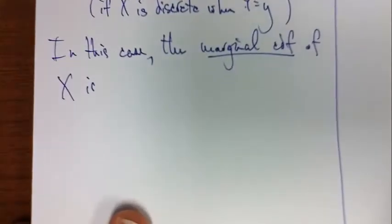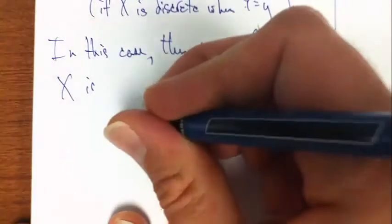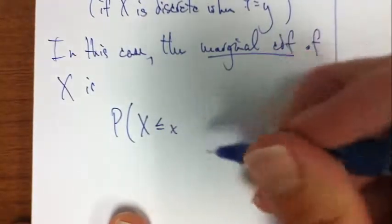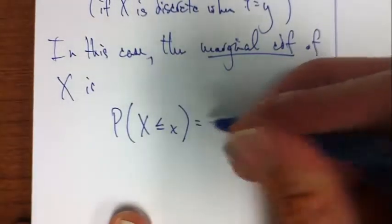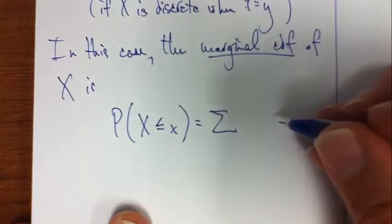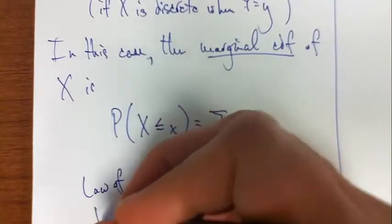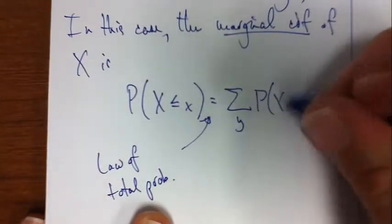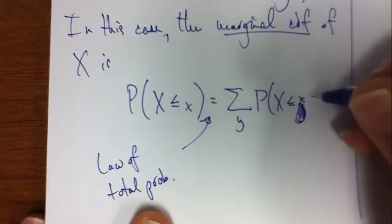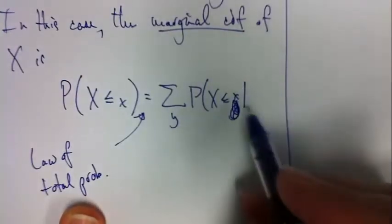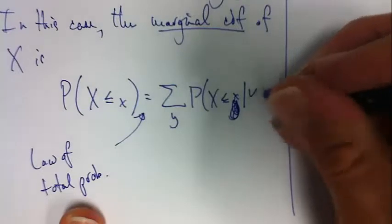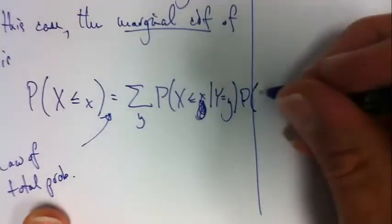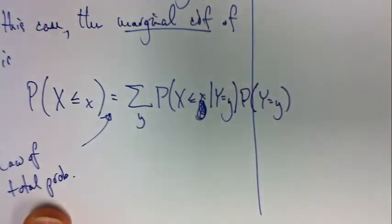In this case, the marginal CDF of x is, and what do we mean by marginal CDF? We just mean the CDF. Again, the word marginal there just means that we know that there's another random variable lying around somewhere. It's just the CDF. But I can write this as, do you remember this thing called the law of total probability? The law of total probability says that I can write this thing as the sum of that x is less than or equal to x, given, I can condition on anything. I'm going to condition on that other random variable that I know is lying around because that's convenient, times the probability that y equals y.